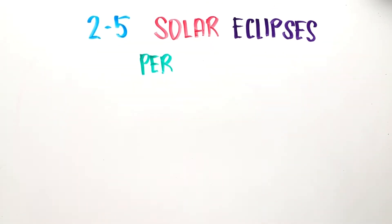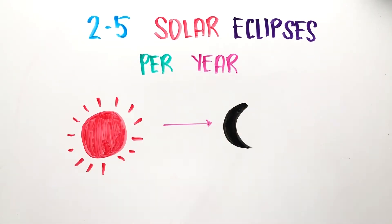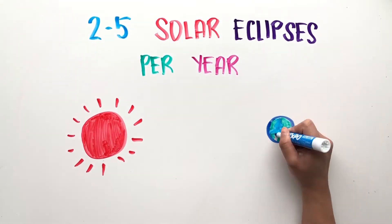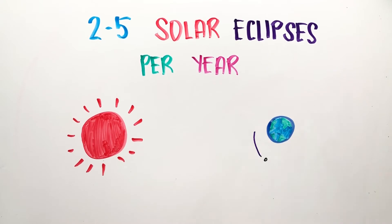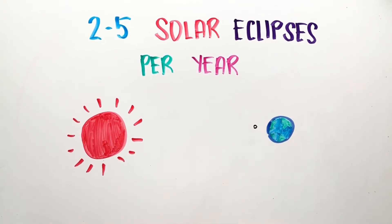Two to five solar eclipses occur each year, turning day into night. Solar eclipses occur when the Moon passes between the Earth and the Sun. But because its orbital path is tilted about 5 degrees, we only see eclipses every one and a half years.